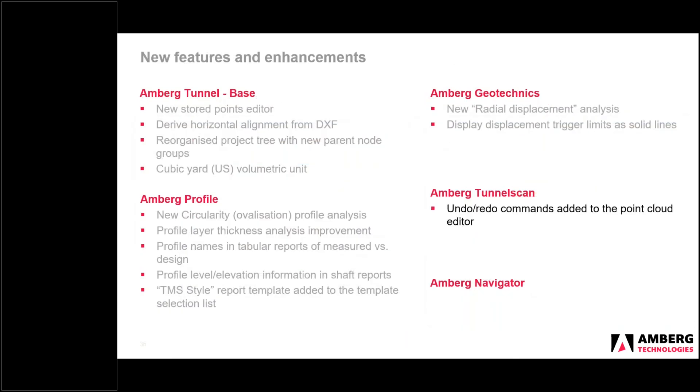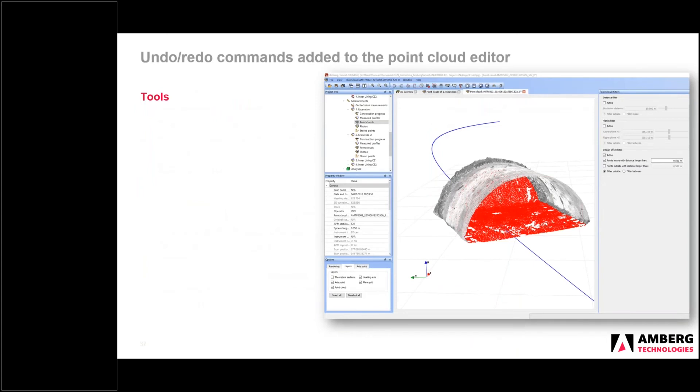So Amberg tunnel scan now. We have now undo and redo commands in the point cloud editor. So this is the first of many changes we're going to make to the point cloud editor. And we're going to pay significant attention to this going forward. We have now the undo and redo buttons. So while you're using the various filters, the distance based filter from the theoretical design or the planes filter or any other filter for that matter, the polygon, for example, you can undo and redo the operation. So for example, in the previous version, if you made a mistake, the solution was to exit out of the editor, lose your work, and then open it up and continue. Now you can just simply undo and redo. Once you save the editor, then the filter points are then permanently deleted. But yeah, this is the first of many areas that we're going to overhaul this point cloud editor and the handling of point clouds going forward.